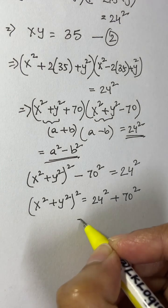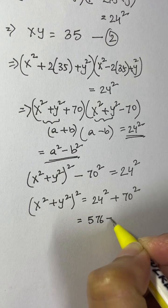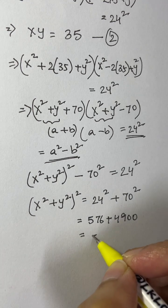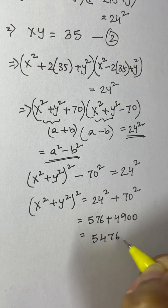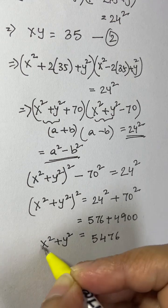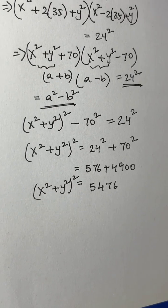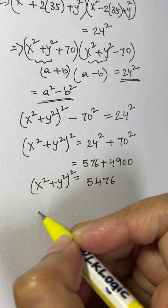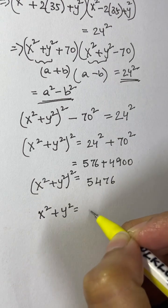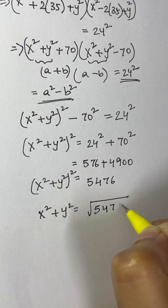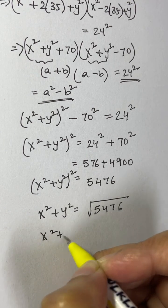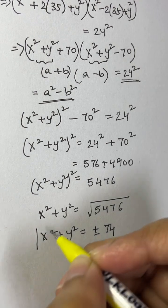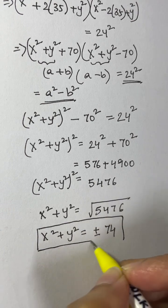So we can write x squared plus y squared, the whole squared, is equal to 24 squared plus 70 squared. That is 576 plus 4900, which equals 5476. Taking square root on both sides gives x squared plus y squared is equal to plus or minus the square root of 5476, which is plus or minus 74.